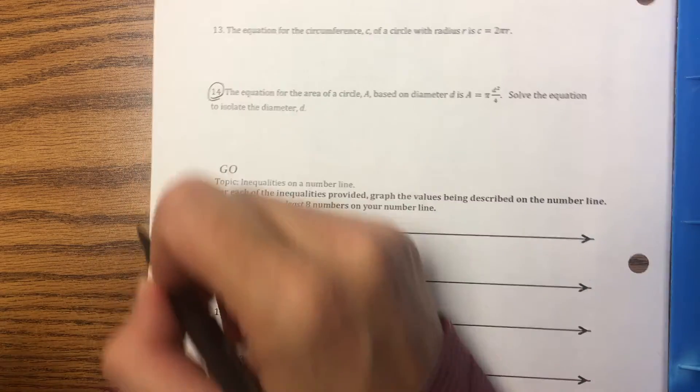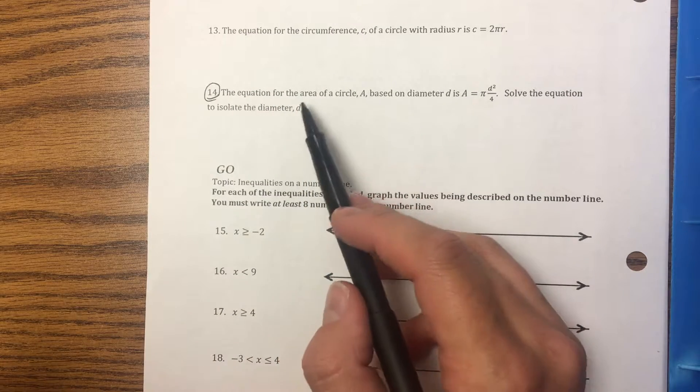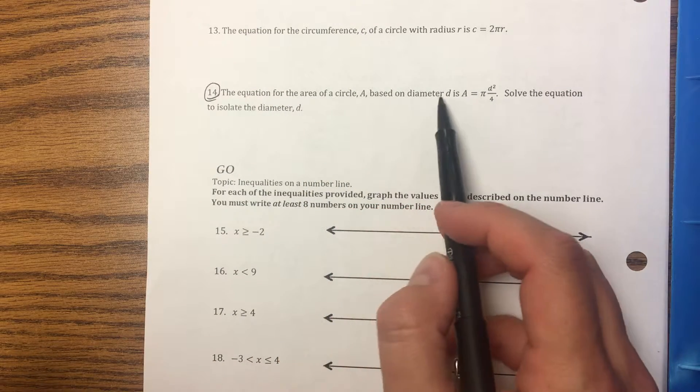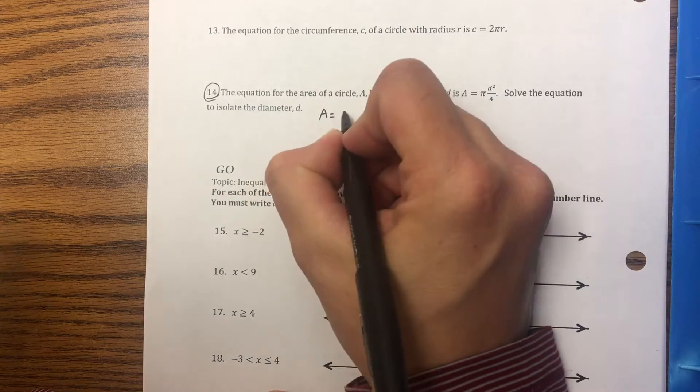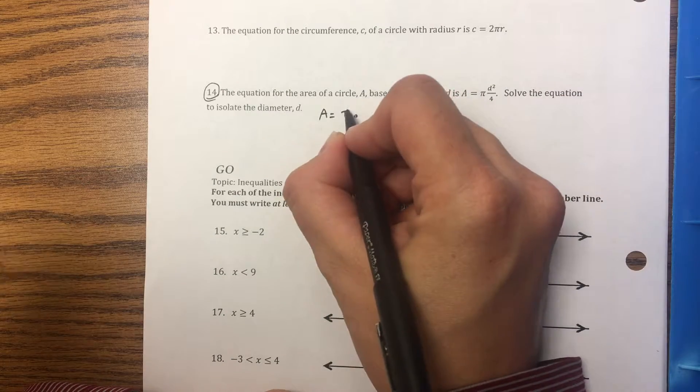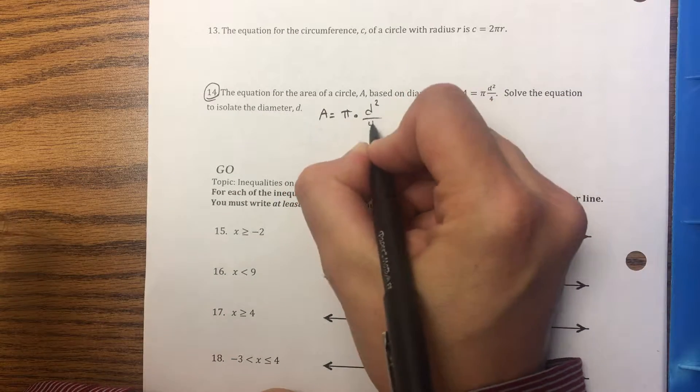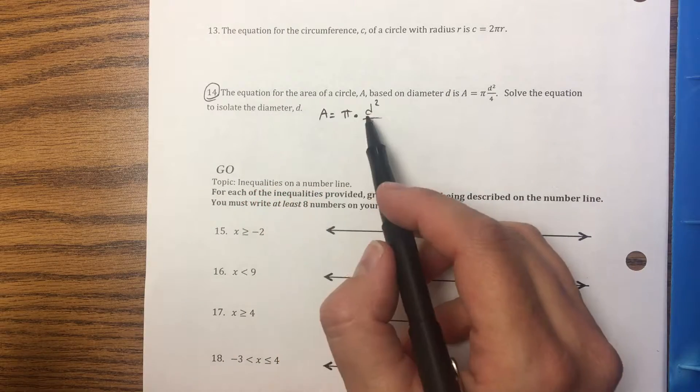I'll do 14 because it has a square in it. The equation of the circle for the area of a circle a based on diameter d is a equals pi. I'm going to rewrite this with a multiply right there because they're next to each other, d squared over 4. Solve the equation to isolate the diameter d.